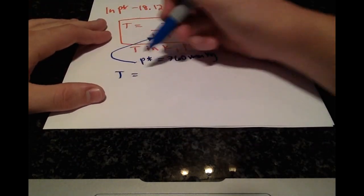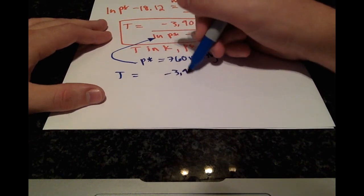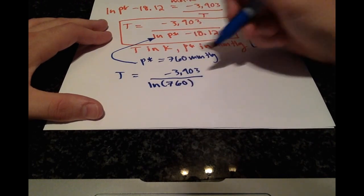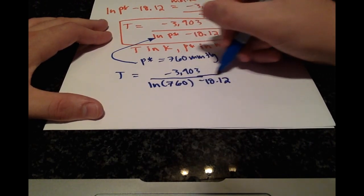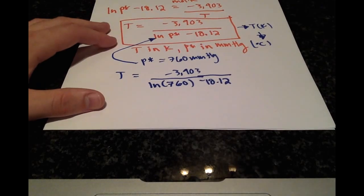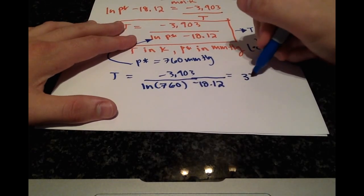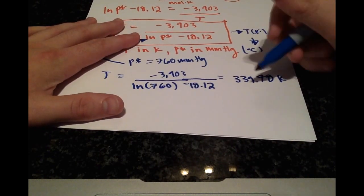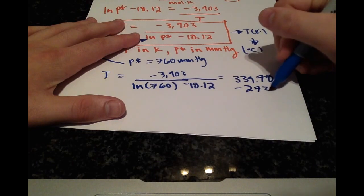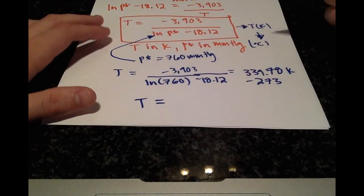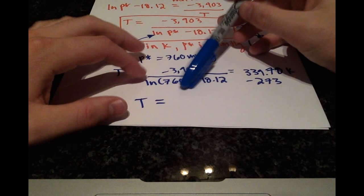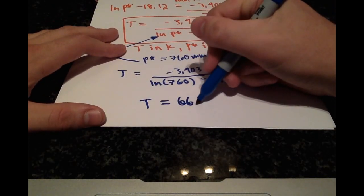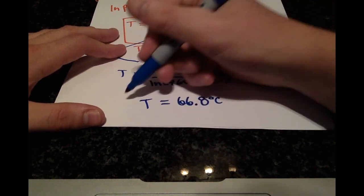Doing that calculation, we get 339.78 Kelvin. Subtracting 273 to convert to Celsius, we get our final answer: the temperature that correlates to a vapor pressure of 760 millimeters of mercury is 66.8 degrees Celsius.